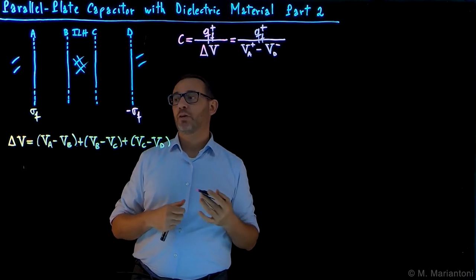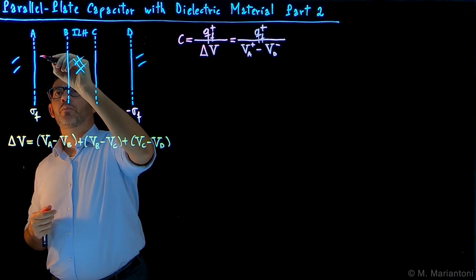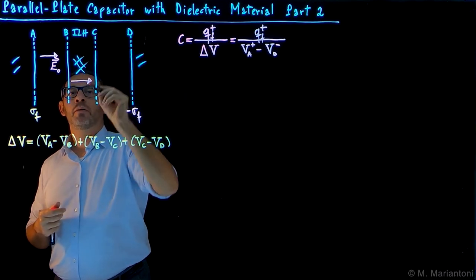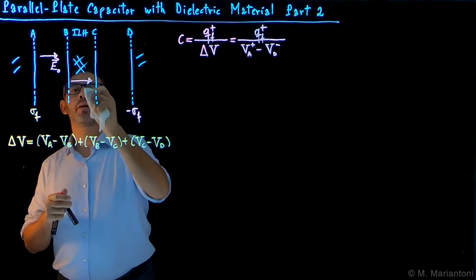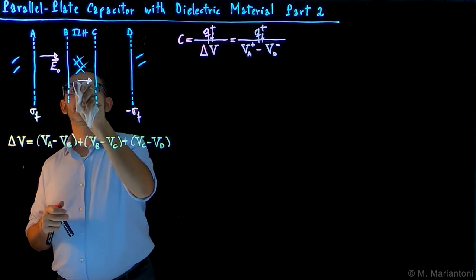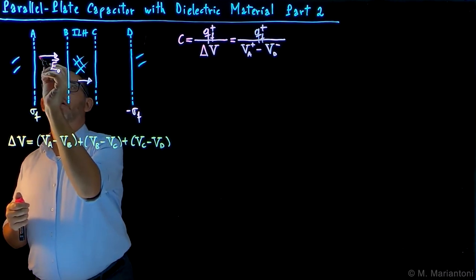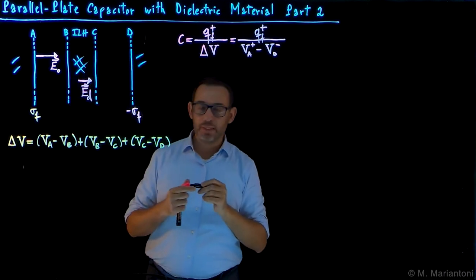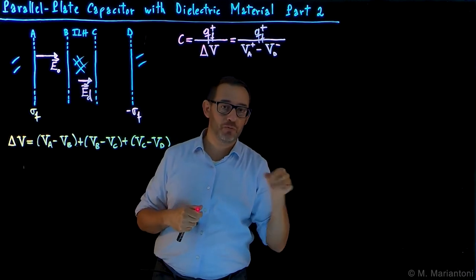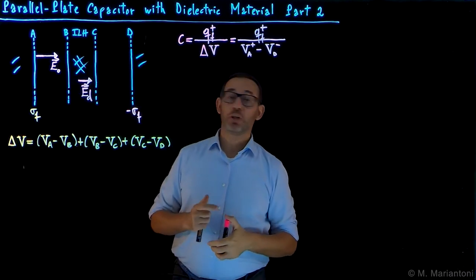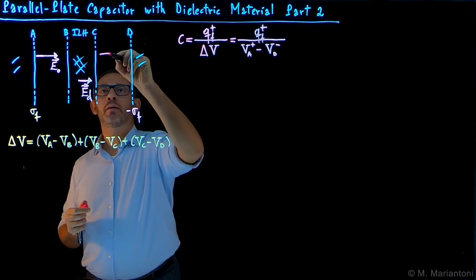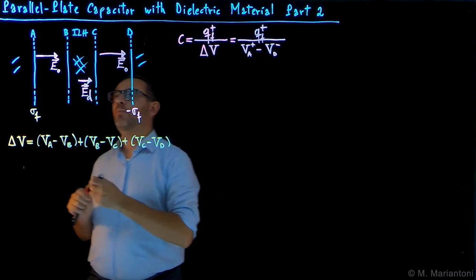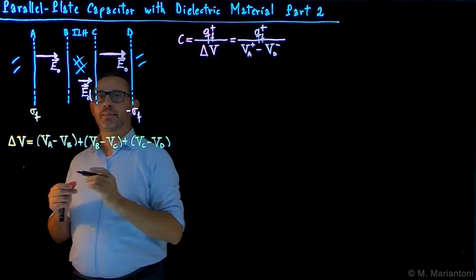We know that the electric field within the plates of this capacitor is uniform. We have a uniform electric field E_0 in the vacuum regions, and a uniform overall field E_D in the dielectric. The field in the dielectric material is the linear superposition of E_0 plus the polarization field, which is a screening field. Therefore, the E_D vector has to be smaller compared to the E_0 vector. Back in the vacuum regions, we again have E_0, and these two vectors are exactly the same length.